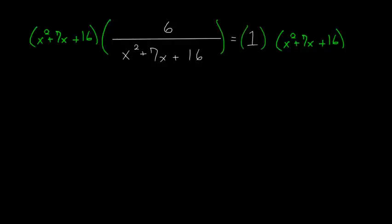And on the left-hand side, notice that the numerator and the denominator both have this quadratic, so they cancel each other out. So we're just left with 6. And on the right-hand side, we're just left with this quadratic, x squared plus 7x plus 16.